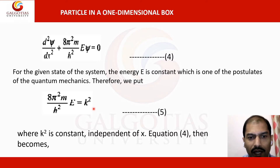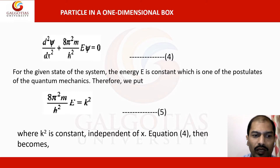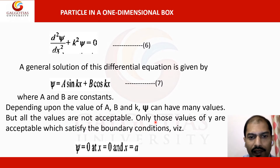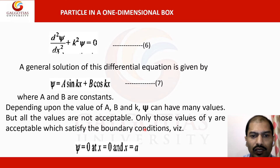The equation then becomes: d²ψ/dx² + k²ψ = 0. The general solution to this differential equation is: ψ = A sin(kx) + B cos(kx), where A and B are constants. Depending on the values of A, B, and k, ψ can take many values, but only those satisfying the boundary conditions are acceptable.